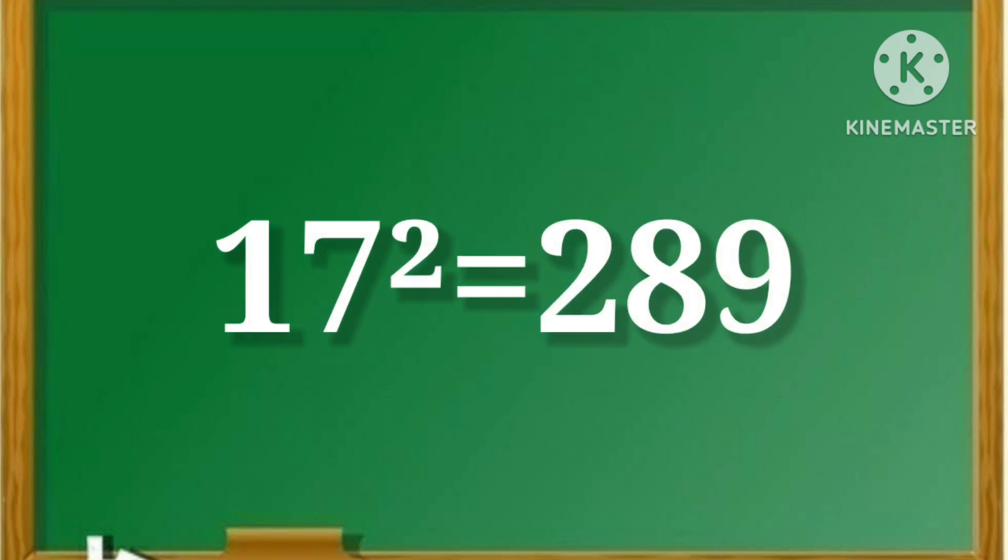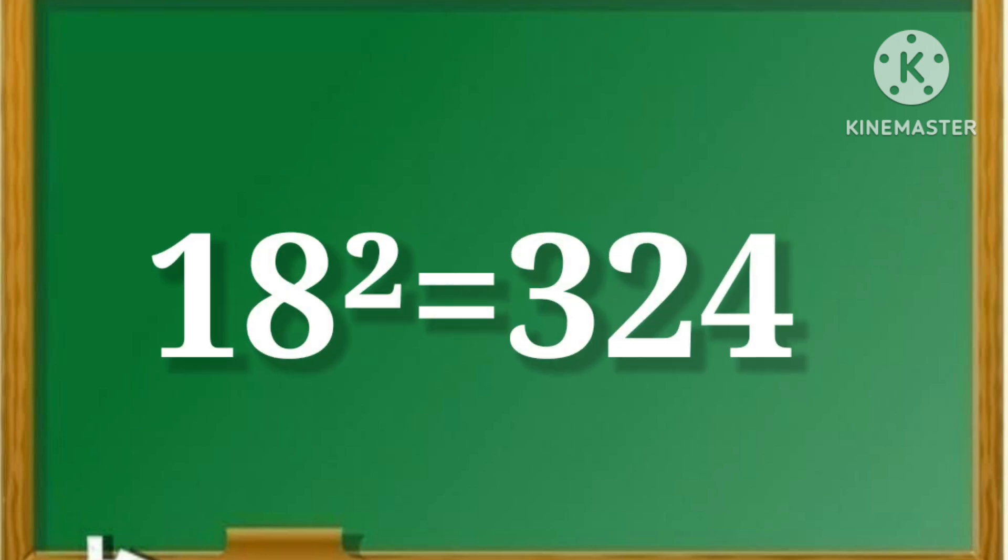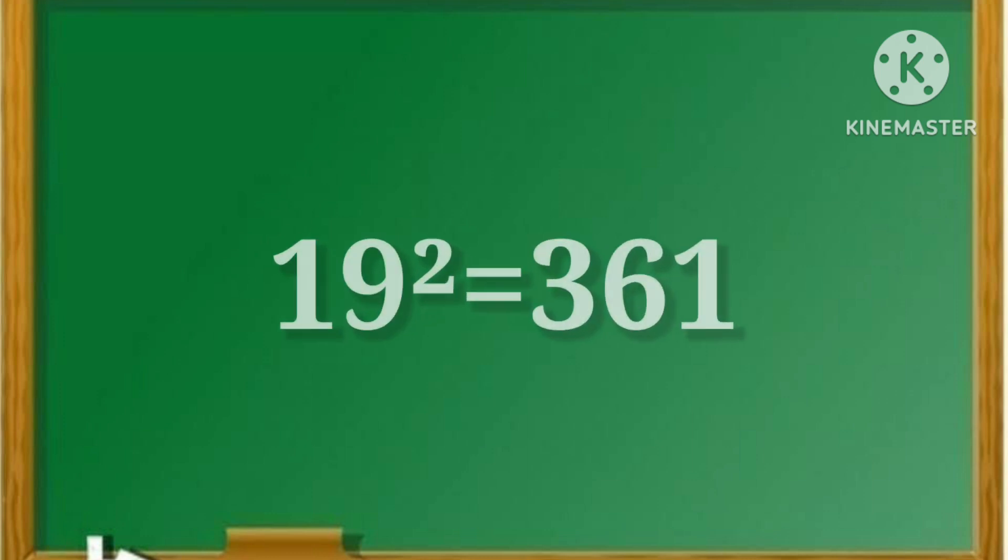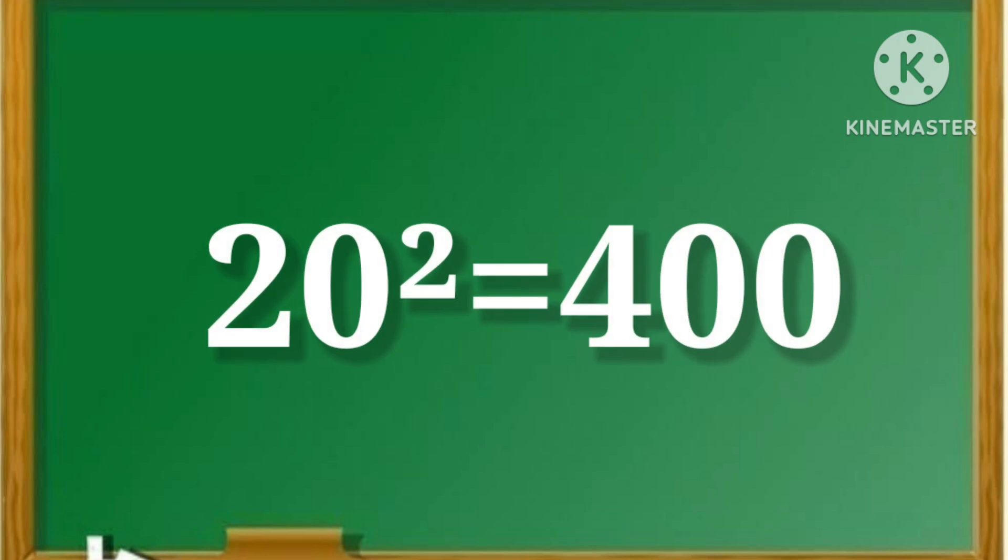17 square is equal to 289. 18 square is equal to 324. 19 square is equal to 361. 20 square is equal to 400.